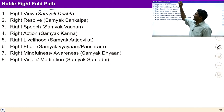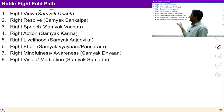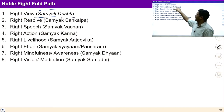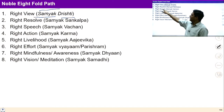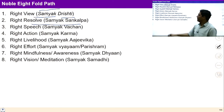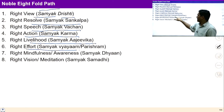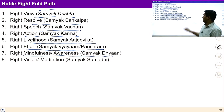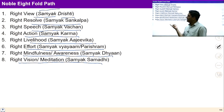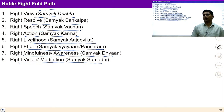Noble Eightfold Path. There are eight steps: number one, Right View — Samyak Drishti; next is Right Resolve — Samyak Sankalpa; Right Speech — Samyak Vachan; Right Action — Samyak Karma; Right Livelihood — Samyak Ajivika; Right Effort — Samyak Parishram; Right Mindfulness or Awareness — Samyak Dhyan; and last is Right Vision or Meditation — Samyak Samadhi. We will study these eight steps and see how they help us ensure harmony in relationships.